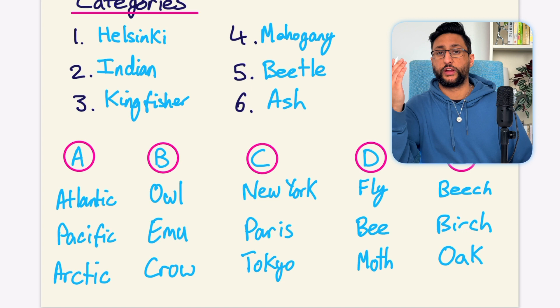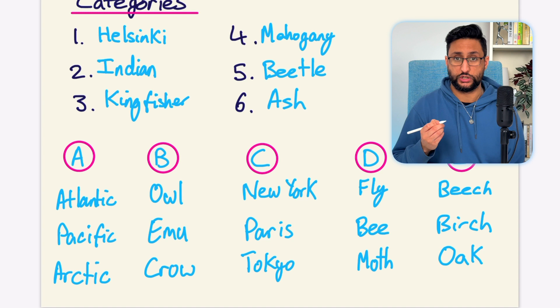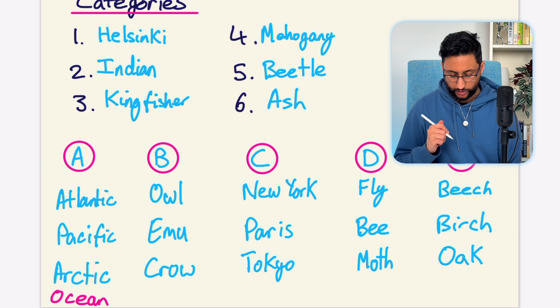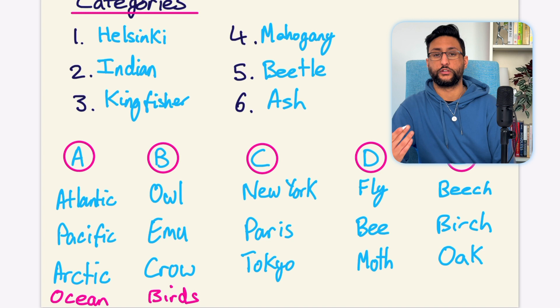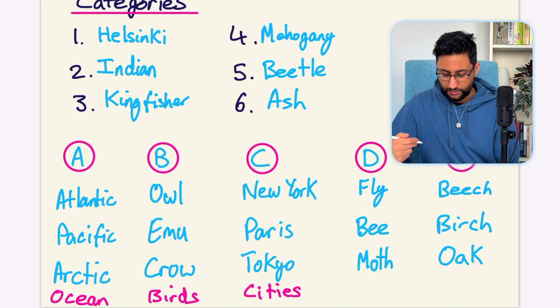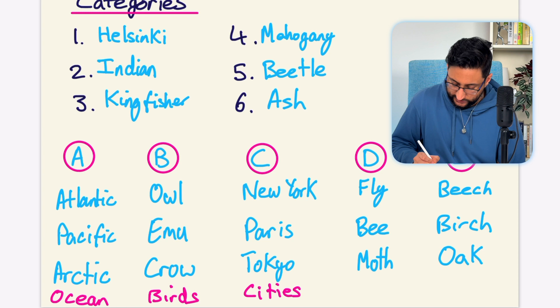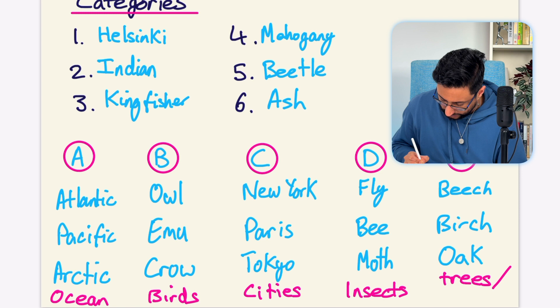Let's try one more set with different categories. In A, we have Atlantic, Pacific and Arctic — from your general knowledge, you should know these are all types of ocean. Category B, we've got owl, emu and crow. You might not know what an emu is, but knowing owl and crow tells you they are types of bird. C, you've got New York, Paris and Tokyo — these are all capital cities. Category D, we've got fly, bee and moth — these are all insects. And lastly, we've got beech, birch and oak, which are all types of tree but also types of wood, so I'm going to write trees slash wood for now.